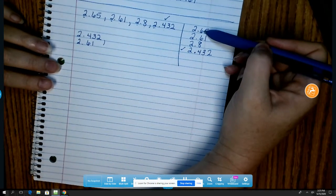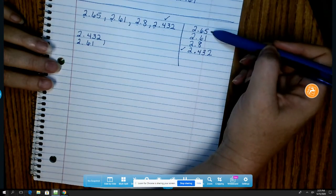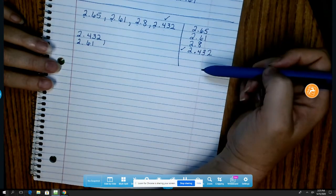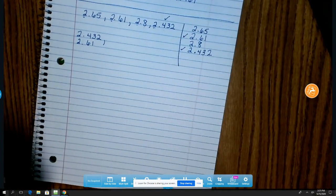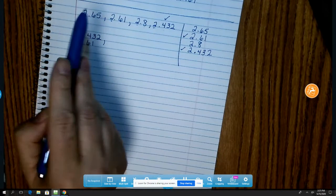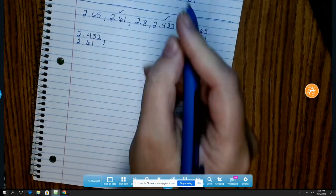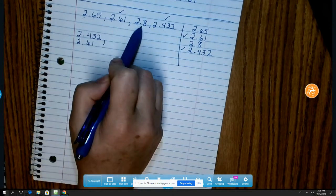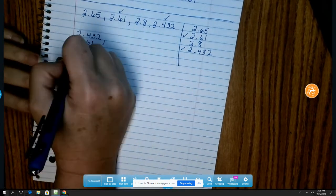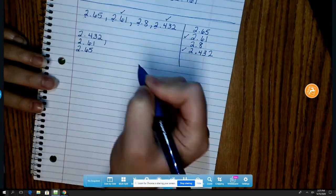And if I look over here, I can see the same thing, 5 and 1, and the 1 is smaller. So now that I have used that one, I know this one must come next because 6 is smaller than 8. So 2 and 65 hundredths.